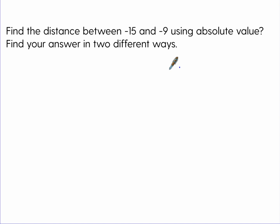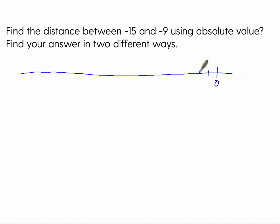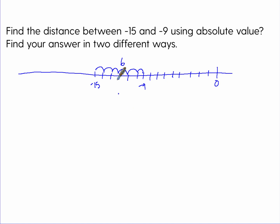Find the distance between negative 15 and negative nine using absolute value — find your answer in two different ways. First, sketch out a number line. Since they're both negative, start at zero and go to negative one through negative fifteen. Counting the units, the answer is six. But how do we find it two ways using absolute value? We always subtract, so think of it as a minus b and b minus a — either will work.